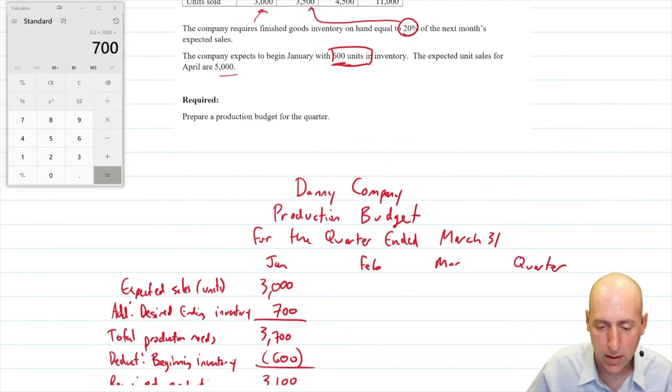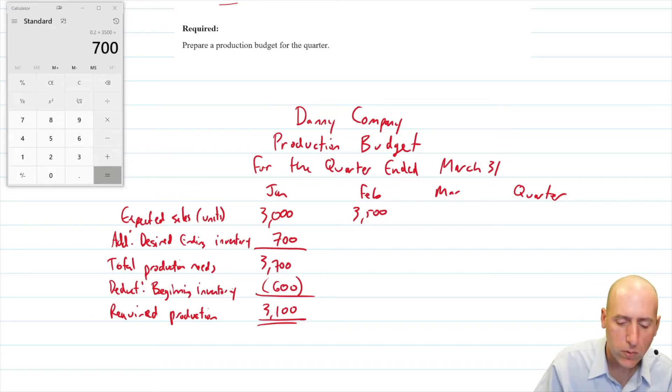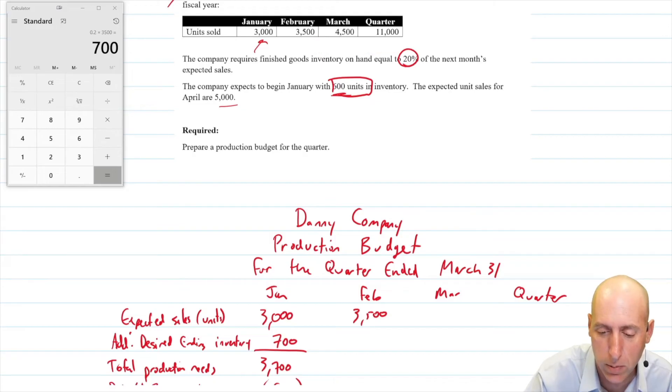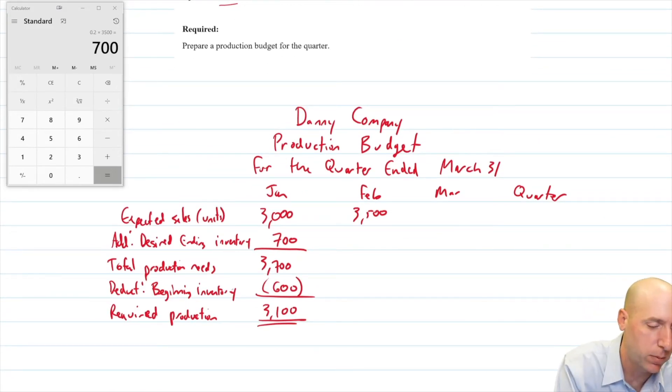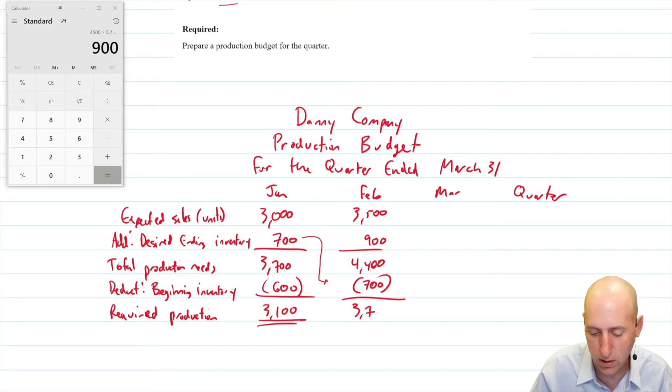Let's do February. February, our expected sales was 3500. Our desired ending inventory for February is going to be 20% of the next month. So 20% of March. That's 900. 4500 times 0.2 is 900. So I'm expecting to sell 3500 units. It means I got to make 3500 units plus I want to have 900 left over. It means in total, I need to come across 4400 units in the month of February. But I start with some inventory. What's my beginning inventory for February? It's the same as my ending inventory for January. The end of January, midnight on January 31st is the same thing as 1201 a.m. on February 1st. So 700 units is what I expect to have on hand at the start of February. It means I don't have to make those 700 units. So that's 3700 units to be produced for March.